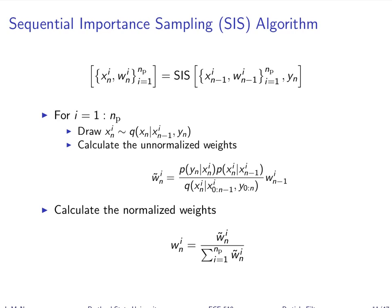This is the simplest of the particle filtering algorithms. It tells you how to get from the measurements at time n, knowing the state at time n minus 1 and the weights at n minus 1 for each particle, to the particle state at time n and the weights at time n for each particle. This is really how you take that one step forward.